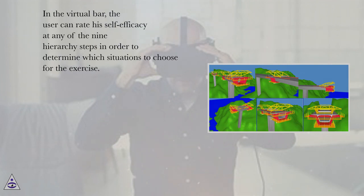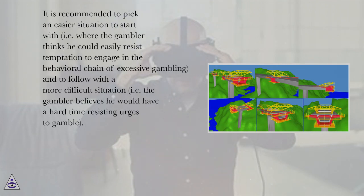It is recommended to pick an easier situation to start with, where the gambler thinks he could easily resist temptation to engage in the behavioral chain of excessive gambling, and to follow with a more difficult situation where the gambler believes he would have a hard time resisting urges to gamble.